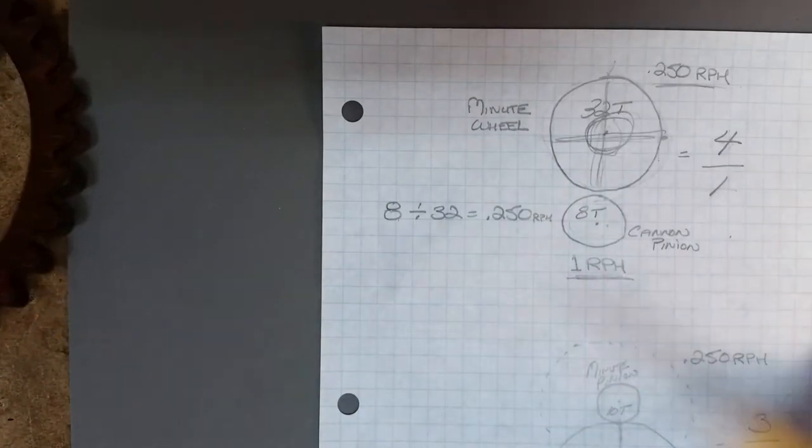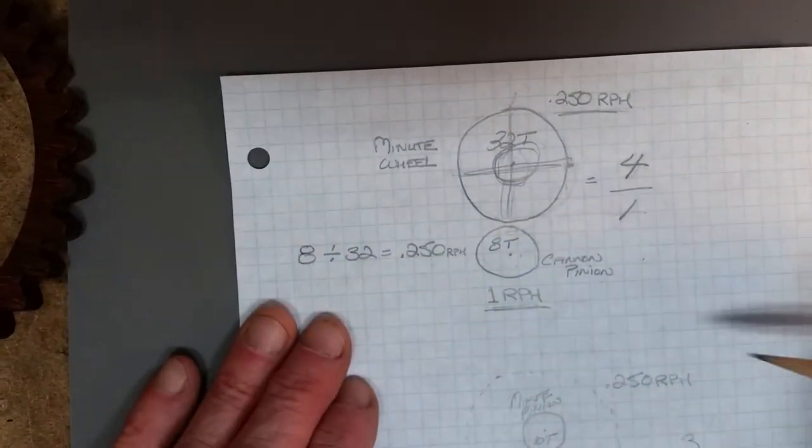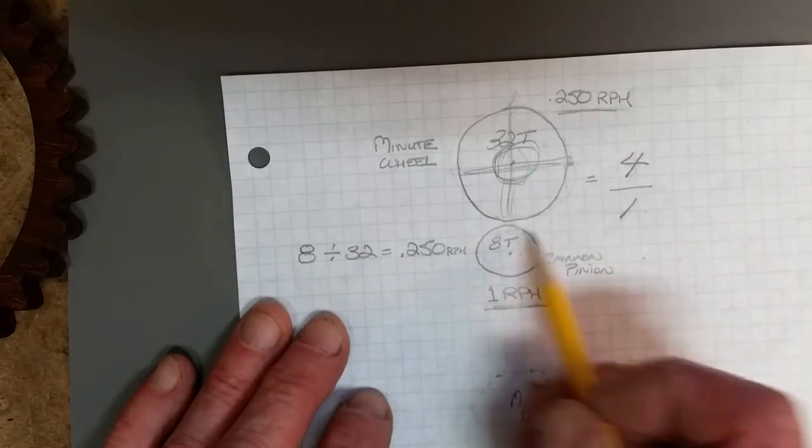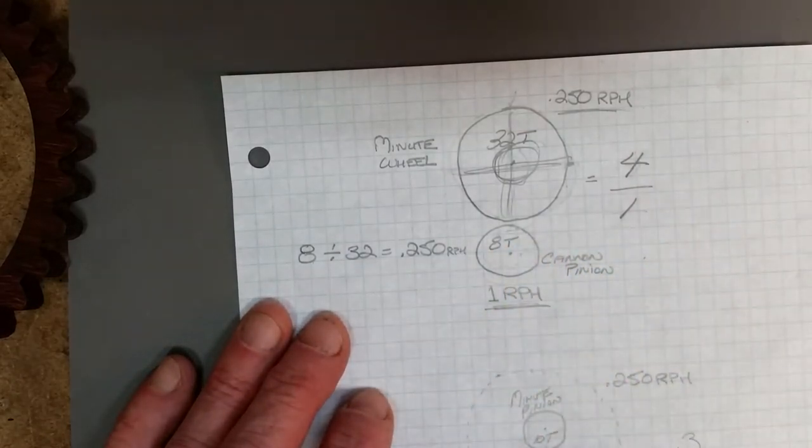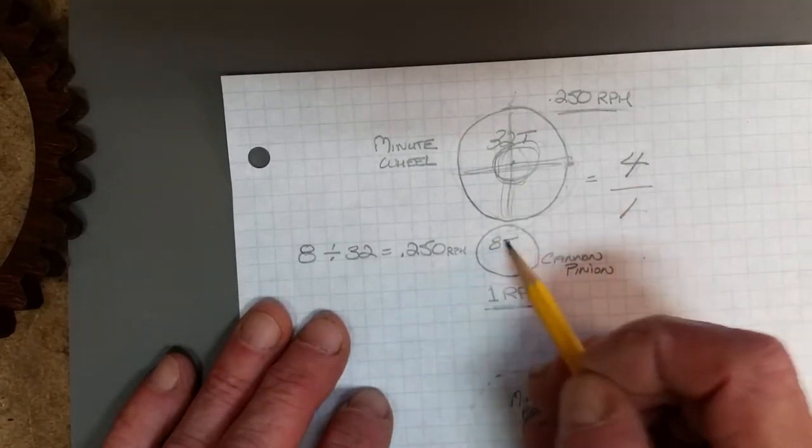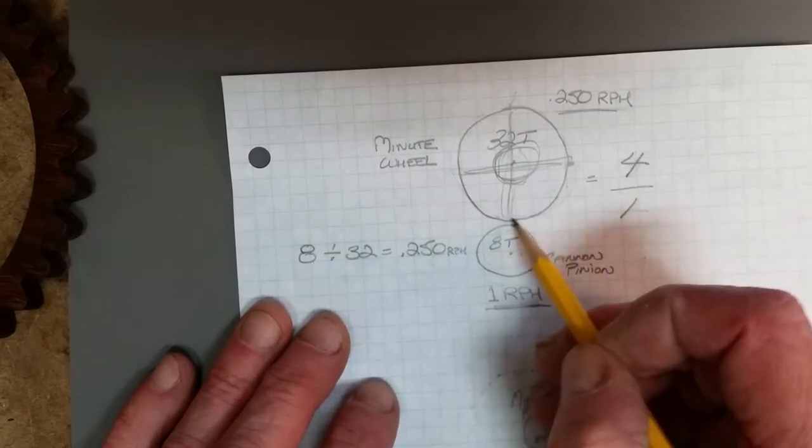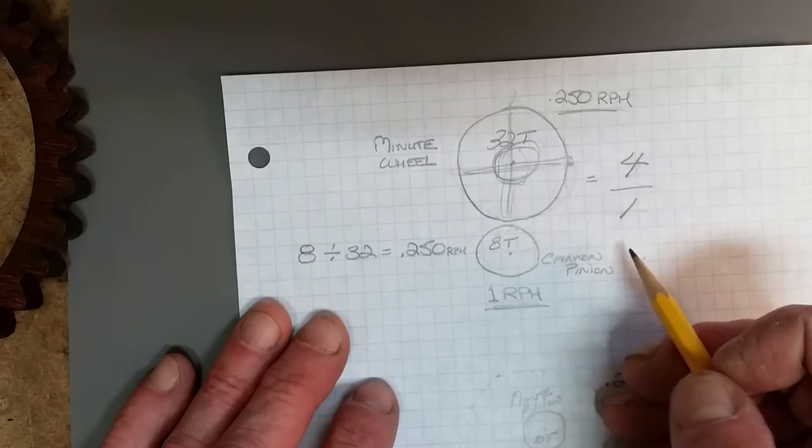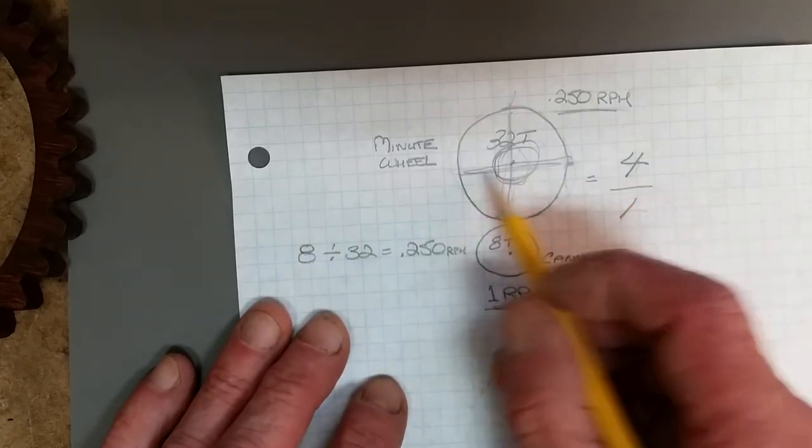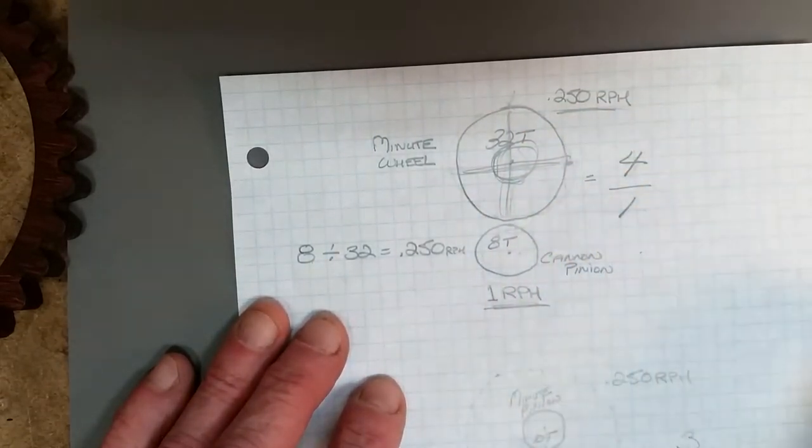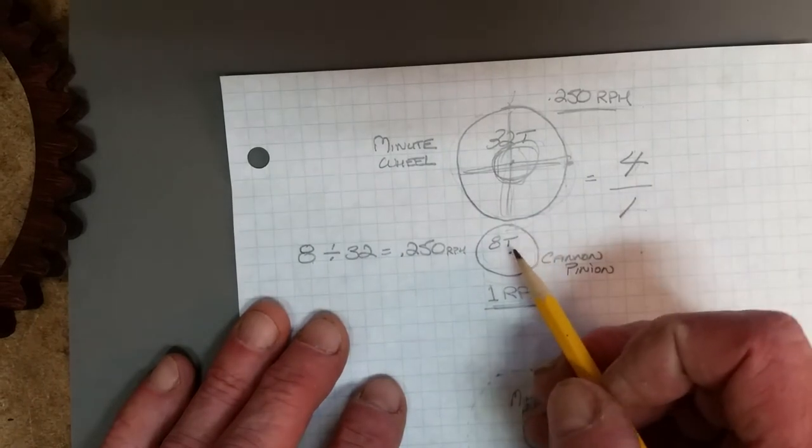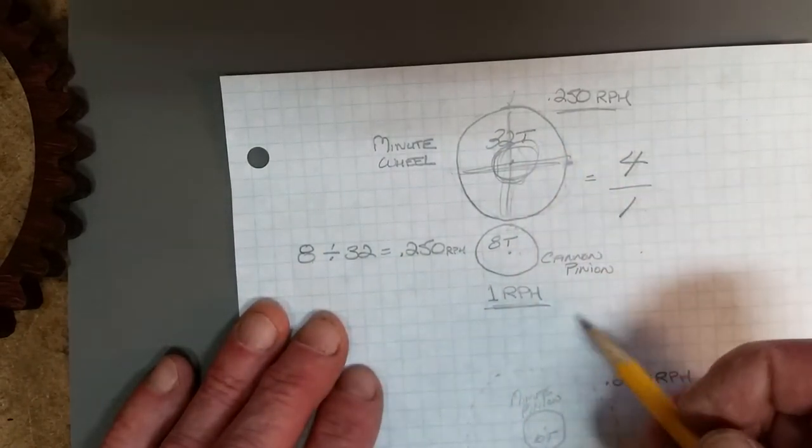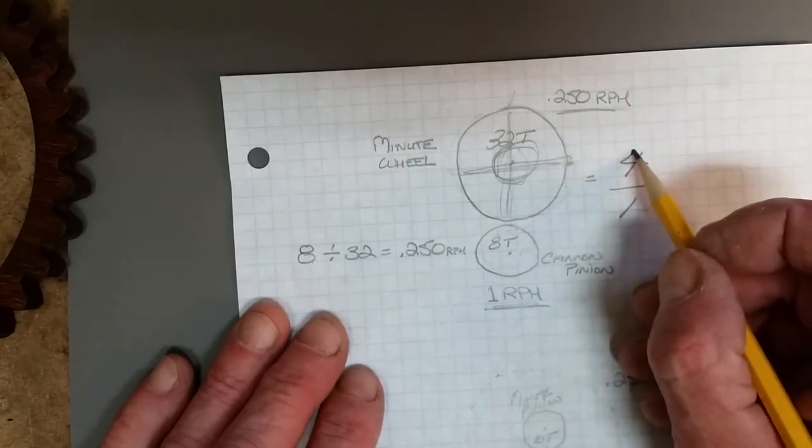Here I've drawn out a 32 tooth gear and an 8 tooth gear. When this 8 tooth gear turns one time, it's going to use up 8 teeth on this 32 tooth wheel here, and that's exactly one quarter of the distance.